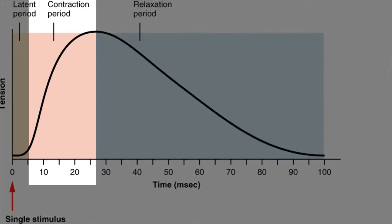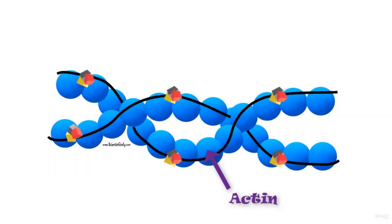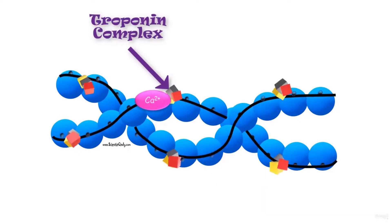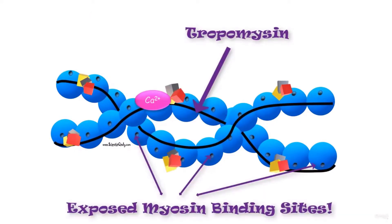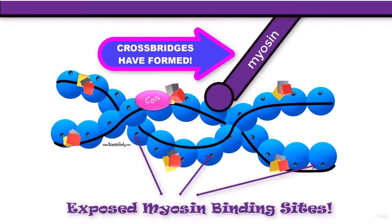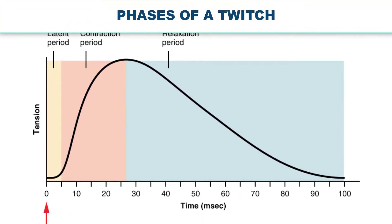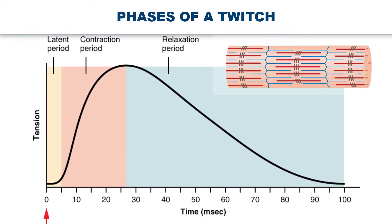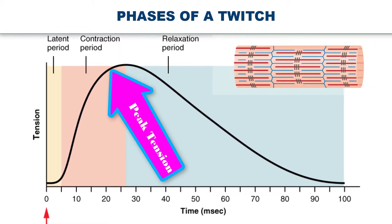In the contraction phase, calcium ions in the sarcoplasm have bound to troponin, tropomyosin has shifted away from active binding sites, and cross bridges have formed. Here the sarcomeres are actively shortening to the point of peak tension.